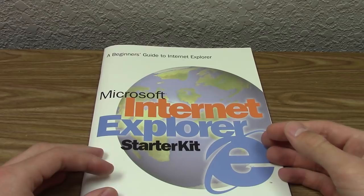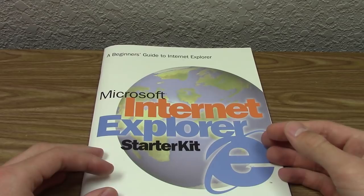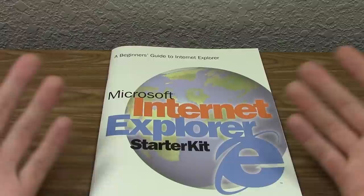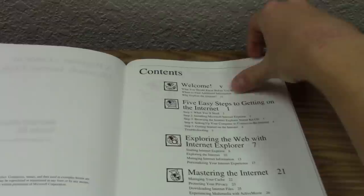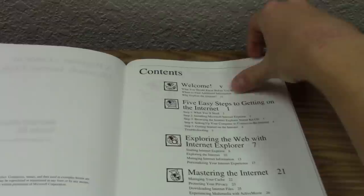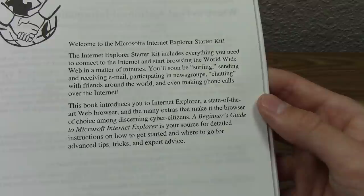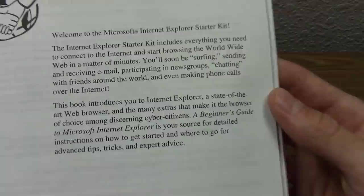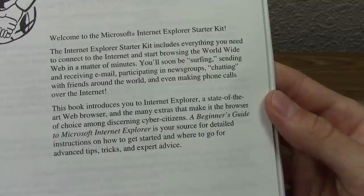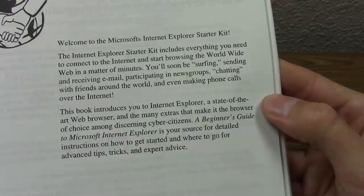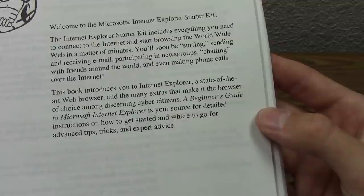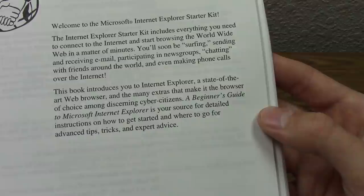This booklet is more than a manual because it contains a lot of useful information about the web and how it works. It's got terminology that would be very useful for somebody who knew nothing about this. Keep in mind, this was written for somebody who knew nothing about the World Wide Web. It has a lot of things in here that are essentially common knowledge today, but were new concepts at the time. The welcome page reads: 'Welcome to the Microsoft Internet Explorer Starter Kit. The Internet Explorer Starter Kit includes everything you need to connect to the Internet and start browsing the World Wide Web in a matter of minutes. You'll soon be surfing, sending and receiving email, participating in newsgroups, chatting with friends around the world, and even making phone calls over the Internet.' This book introduces you to Internet Explorer, a state-of-the-art web browser, and the many extras that make it the browser of choice among discerning cyber citizens.